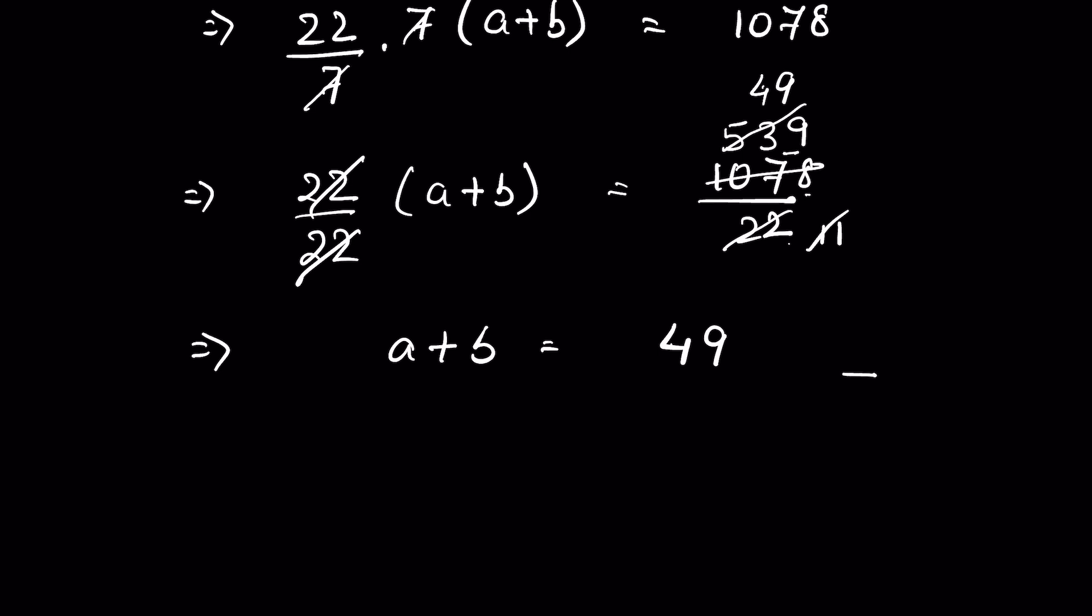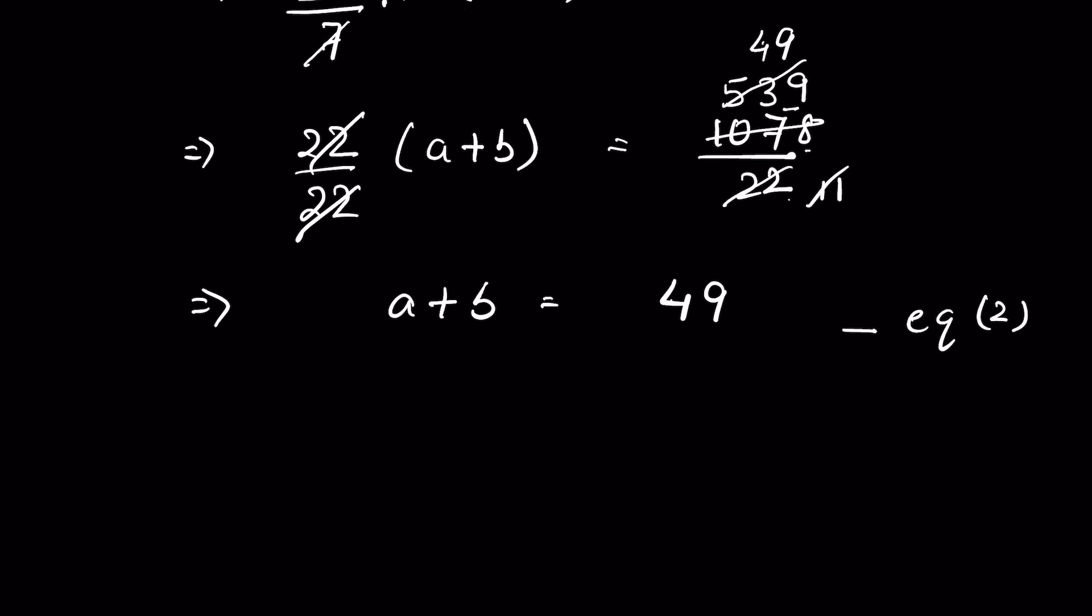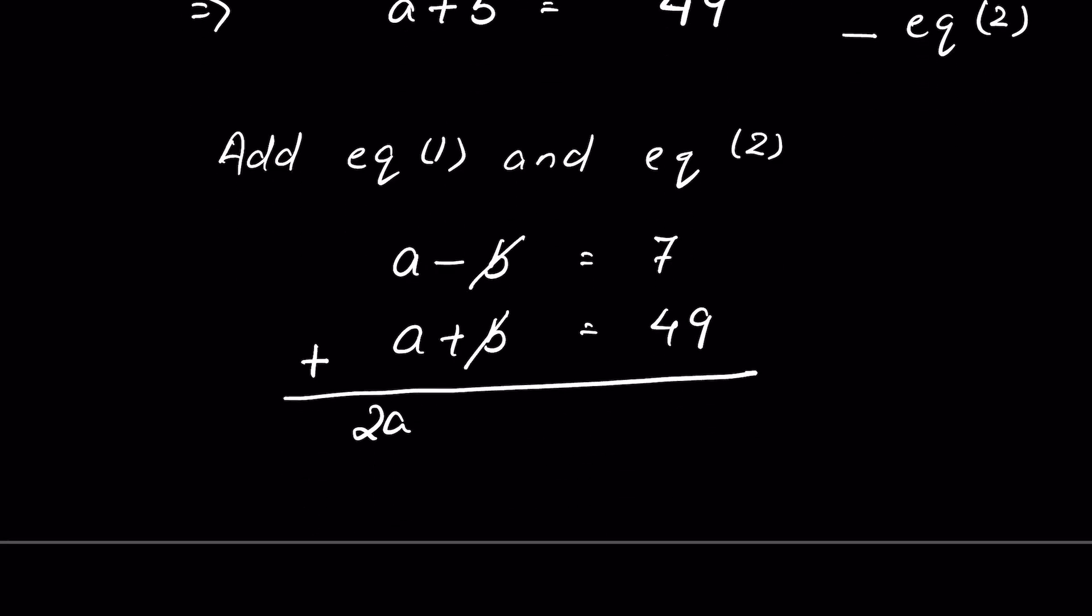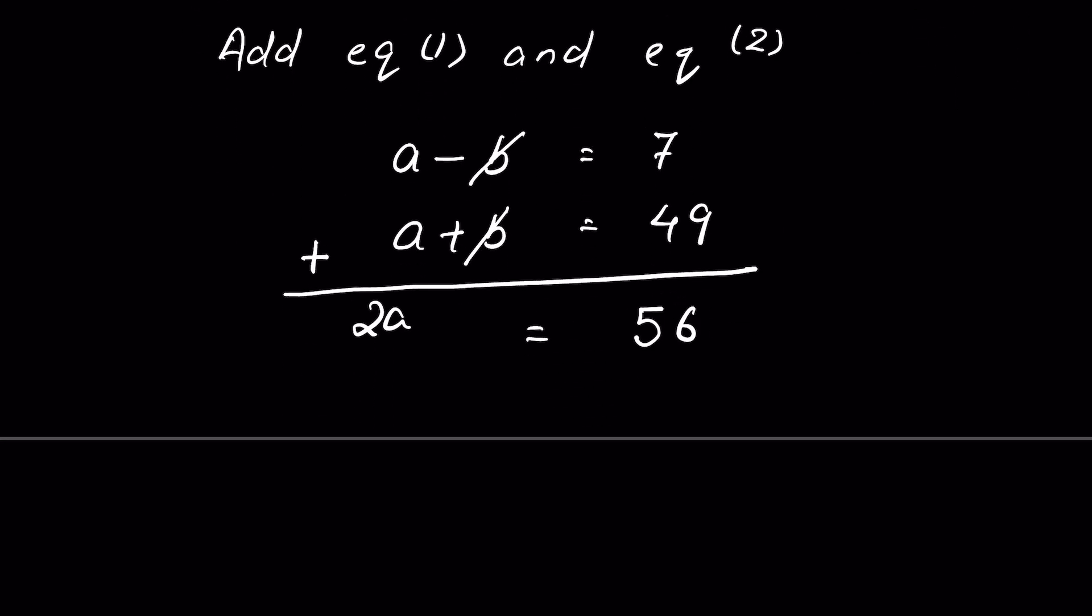Let this be equation 2. Now add equation 1 and equation 2. So a minus b equals 7, a plus b equals 49. We add them: 2a. This b and this b gets cancelled. Is equal to 56, or a is equal to 56 upon 2, which is 28.